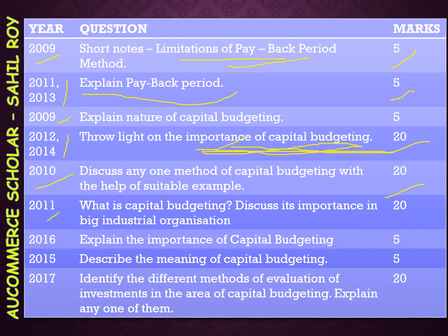Agla question 2011 mein poocha gaya: 'What is capital budgeting? Discuss its importance in big industrial organizations.' Jo bhi importance hai likh dijiye. 2016 mein 5 marks ka question hai: 'Explain the importance of capital budgeting.' 2015 mein question hai: 'Describe the meaning of capital budgeting' for 5 marks. 2017 mein 20 marks ke liye poocha gaya: 'Identify the different methods of evaluation of investment in the areas of capital budgeting and explain one of them.' Hopefully aapko idea lag gaya hoga ki capital budgeting chapter mein kya sawaal pooche jaate hain.